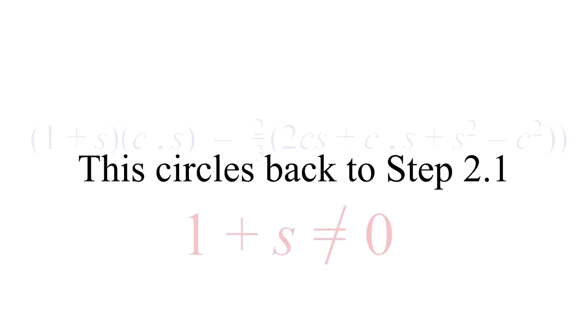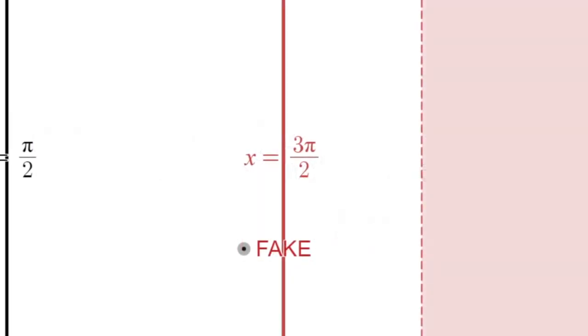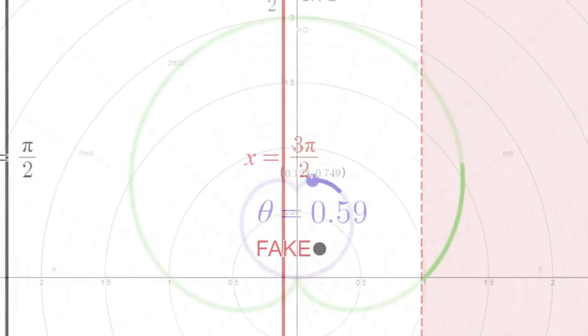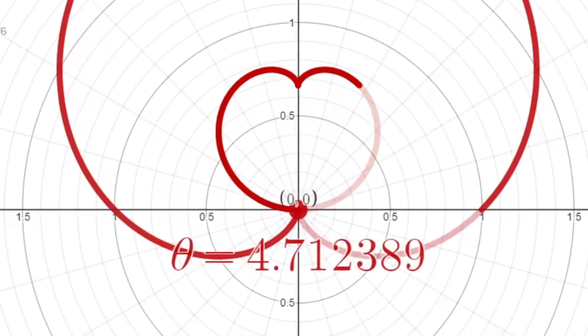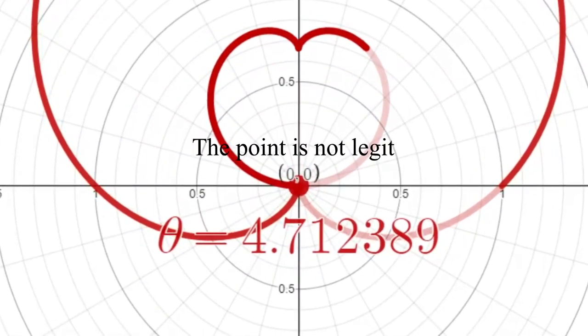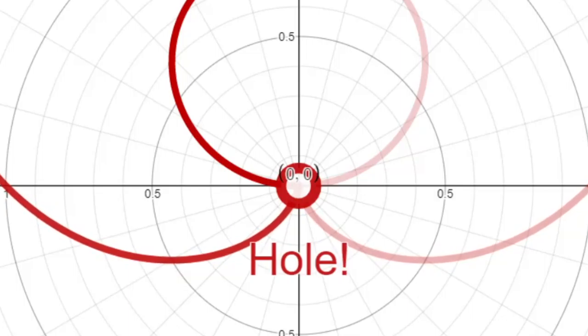Obviously this circles back to step 2.1 where we prove that 3 pi over 2 is not legit. Since the evolute at 3 pi over 2 is 0, 0, the point is not legit, thus a hole.